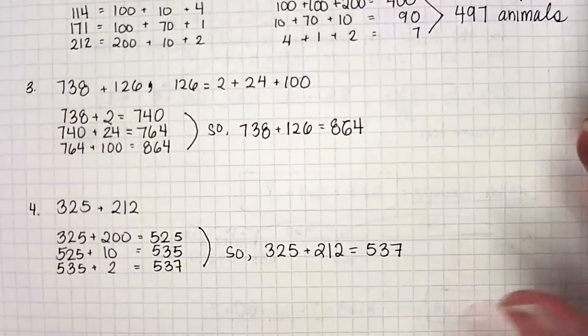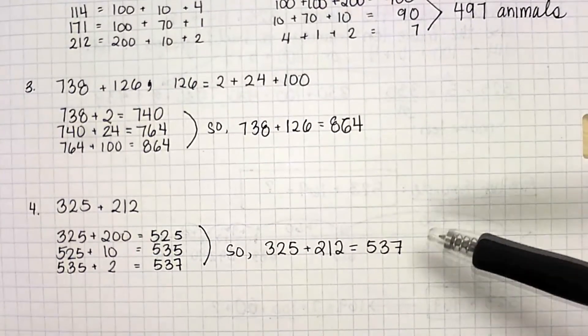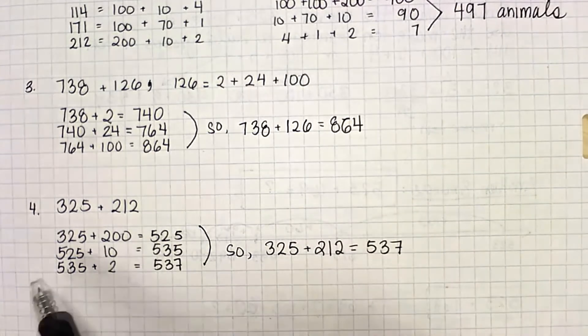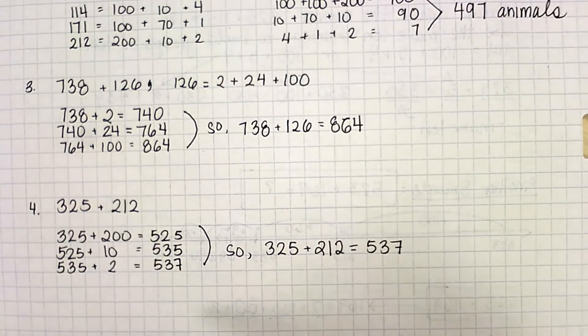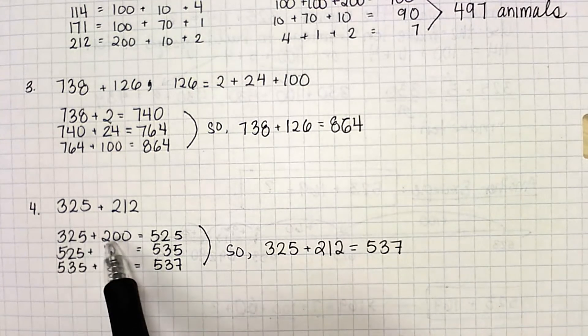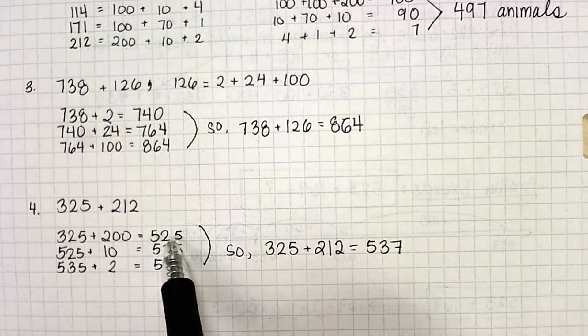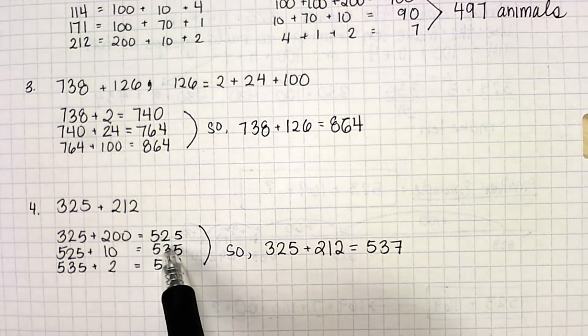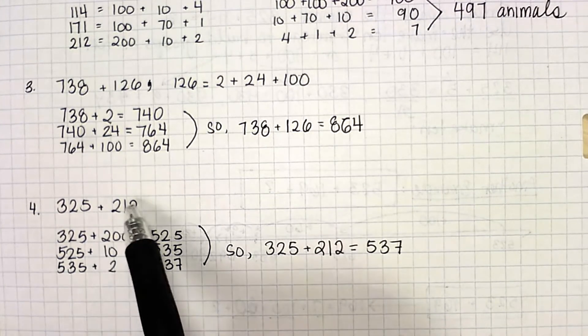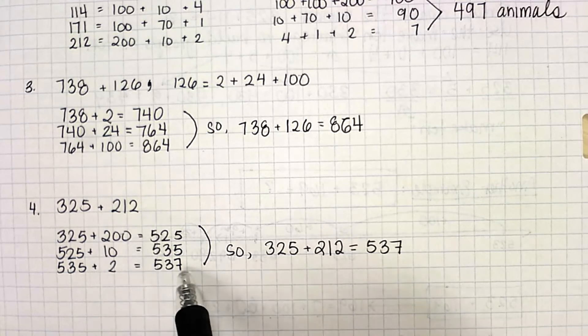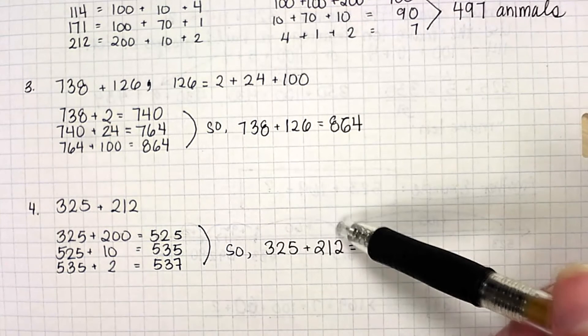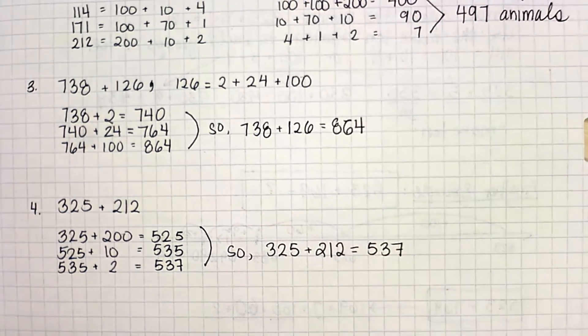For number four, we're going to use the number line property where we're using individual place values. So 325 plus 212. So 325 plus the 200 got me to 525. 525 plus the 10 got me to 535. And 535 plus the remaining two got me to 537. So 325 plus 212 equals 537.